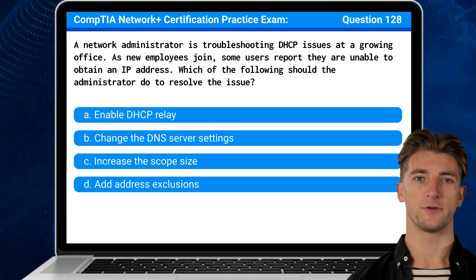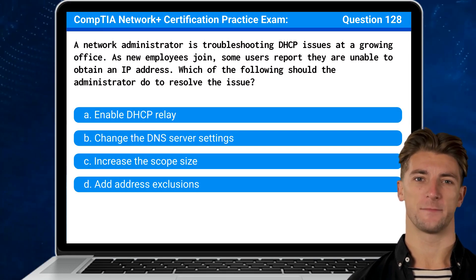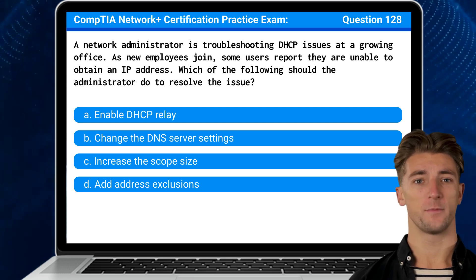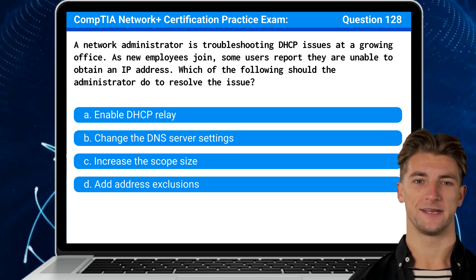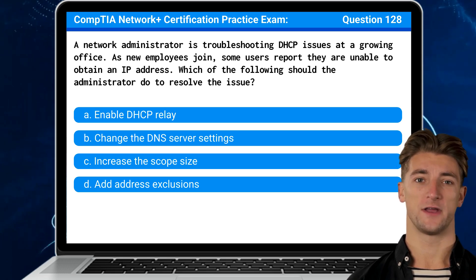Question 128. A network administrator is troubleshooting DHCP issues at a growing office. As new employees join, some users report they are unable to obtain an IP address. Which of the following should the administrator do to resolve the issue?